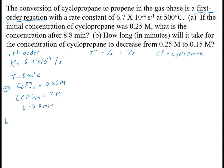Part B wants to know the time if the concentration decreases from 0.25. So that's still my initial concentration. So my concentration of Cp at time t is going to be equal to 0.15 molar.